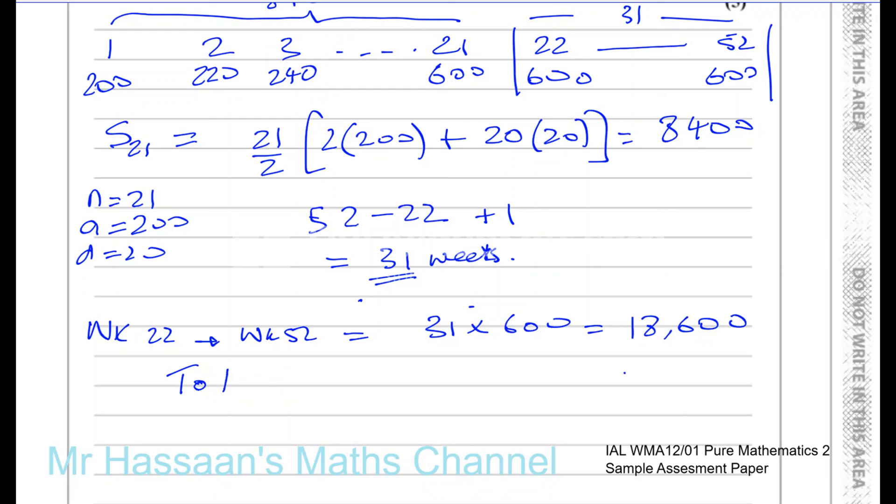Therefore, the total sum, the total number of phones sold from week 1 up to week 52, is going to be the sum of 8,400 plus 18,600, and that's going to give us 27,000 phones sold. And there we have the answer to this question.